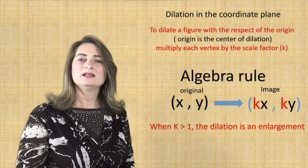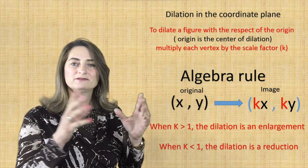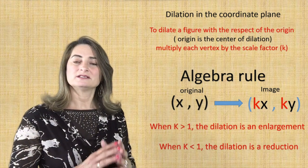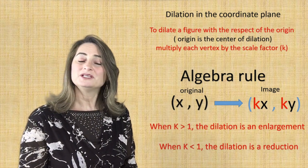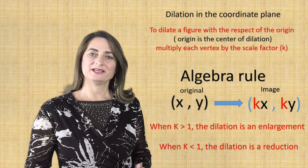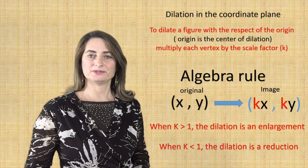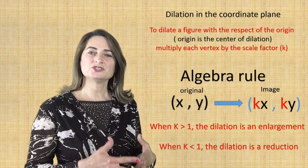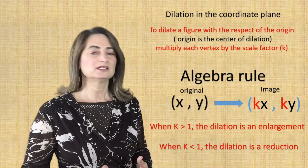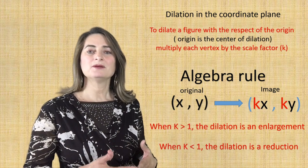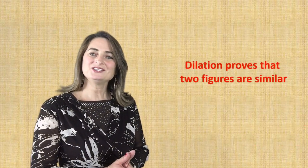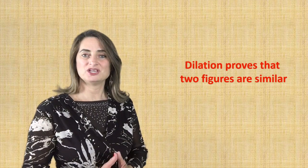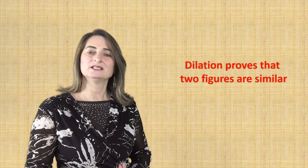When the scale factor is more than one, the dilation will be an enlargement, which means making the figure bigger. When the scale factor is less than one, the dilation is a reduction, which means making the image smaller. Since we multiply each vertex by the same number and the original is getting bigger or smaller, the original and the image are similar — not congruent — because they have the same shape but not the same size. So dilation proves similarity. If you can prove that the shape changed by a scale factor, then they are similar.